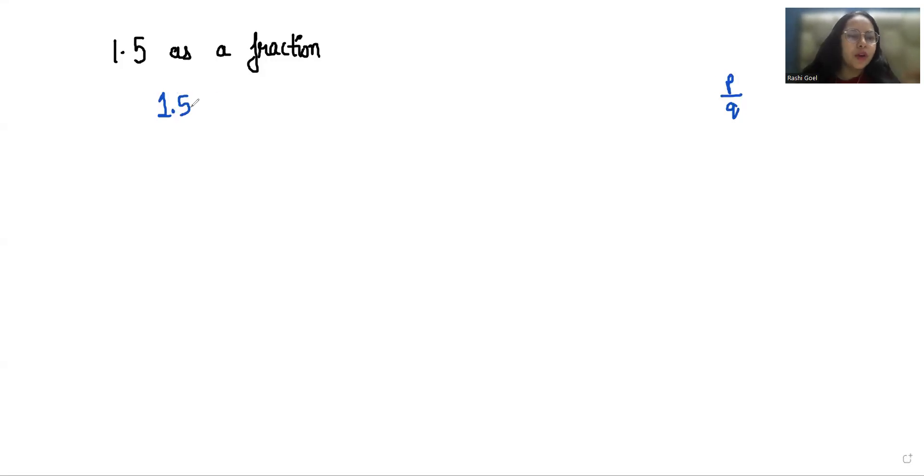So 1.5, we have to convert to p by q. I'll take 1 in the denominator. Now we have to multiply by 10 in numerator and denominator depending upon the digits after the decimal. There is one digit after the decimal, so we'll multiply by 10 in numerator as well as denominator.